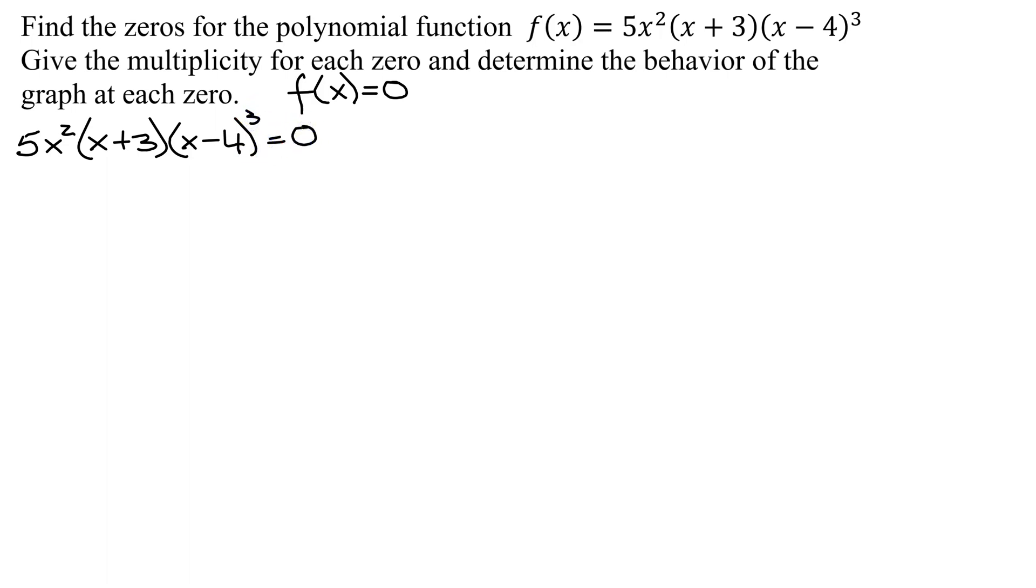So I have 5x squared times the quantity x plus 3 times the quantity x minus 4 all cubed equals zero. Now, using the zero product property, I have a bunch of things multiplied together equals zero. We solve it by setting each of them equal to zero. So I get 5x squared equals zero.